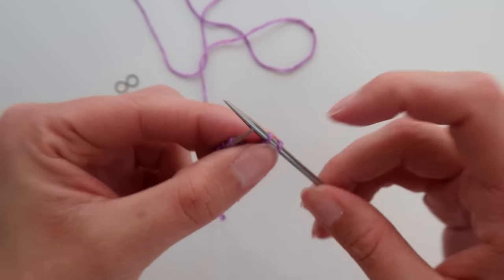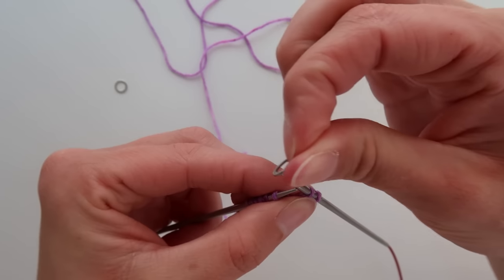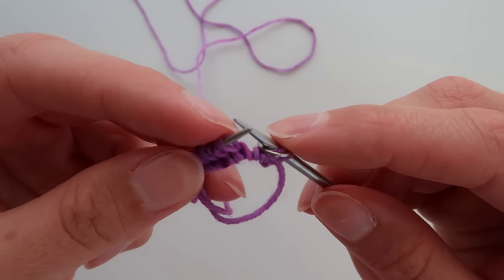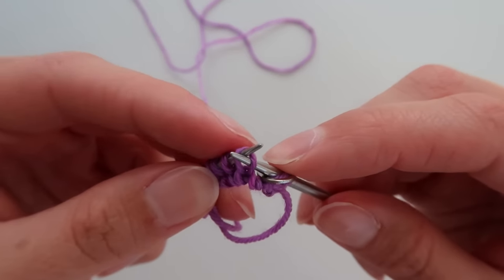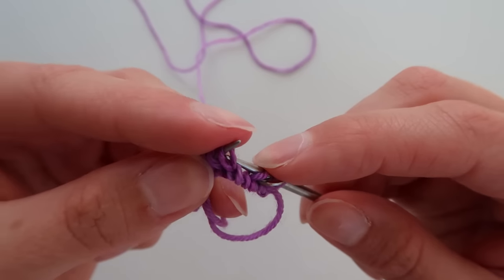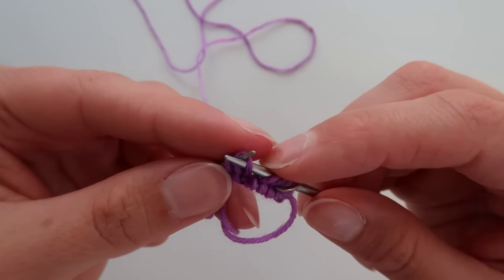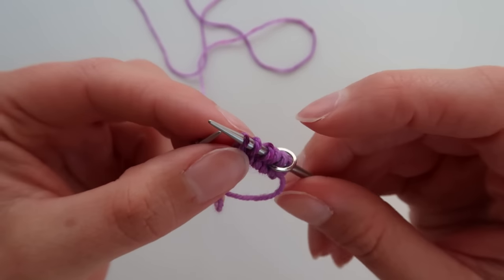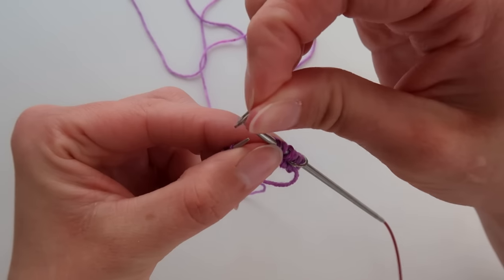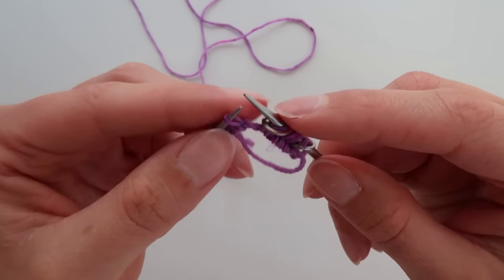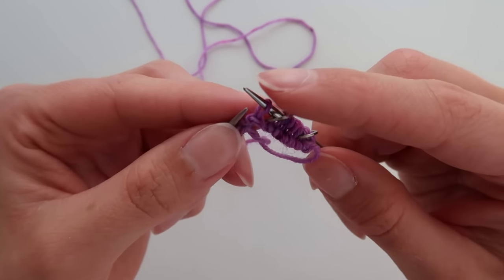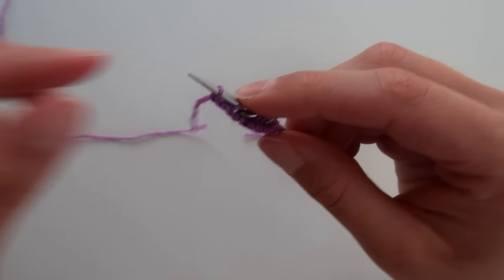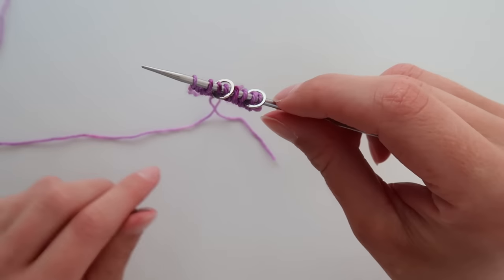Now that I've slipped two I need to place a marker. Perfect all right now we're going to slip four correcting them so coming in from the back one two three four we're going to place another marker and now our last two one and two and look at that we're back to where our working yarn is we have our two markers placed.